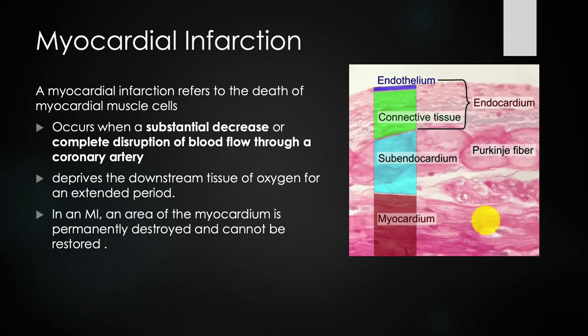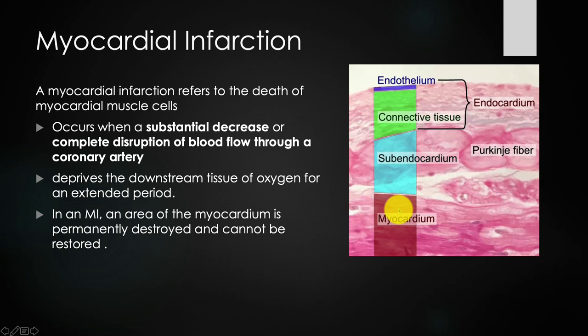The depolarization activates the sarcoplasmic reticulum and calcium floods the cell. Calcium binds to troponin, and then we have cross-bridge formation with myosin and actin — that's how contraction happens. Cardiomyocytes are branched, unlike linear skeletal muscle. They usually have a single nucleus per cell, and they have intercalated discs and gap junctions.